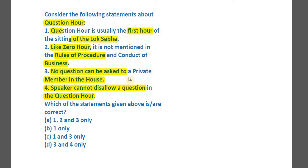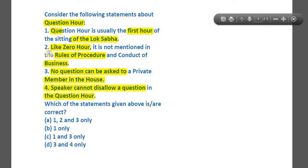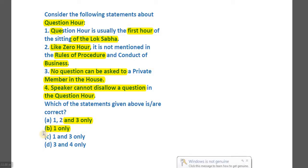Statement number three says no question can be asked to a private member in the house. A private member is any legislator who is not a minister. If a bill has been introduced by a private member, obviously questions would be asked to them. So statement three is also incorrect, eliminating options A and C. Even without knowing statements one and two, the answer is B.